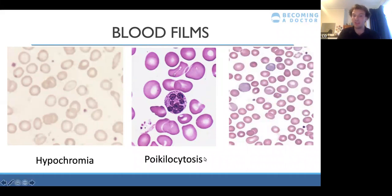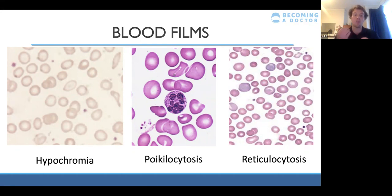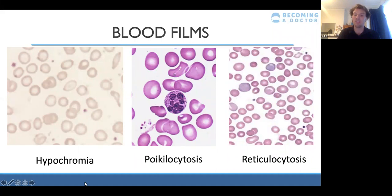Next is an example of poikilocytosis — a change in shape — where the red blood cells are not the round or oval shape you'd expect; they have odd shapes. On the far right is reticulocytosis, an increase in immature red blood cells. These can be difficult to identify without comparison, but the characteristic is that they're quite round with very little pallor in the middle — so if anything, they're hyperchromic, the opposite of hypochromic.